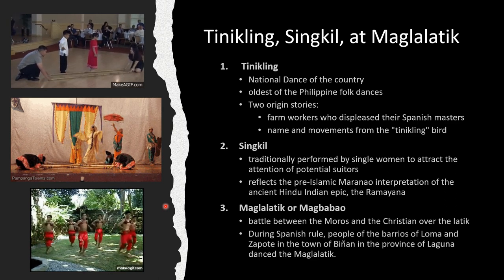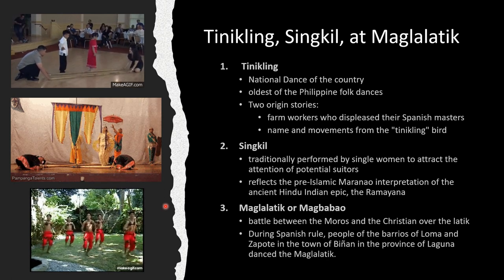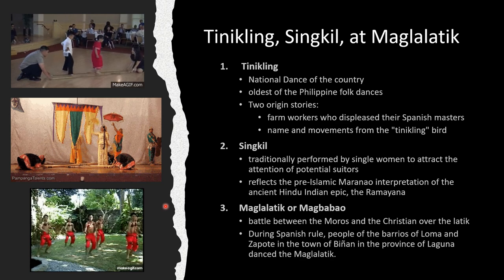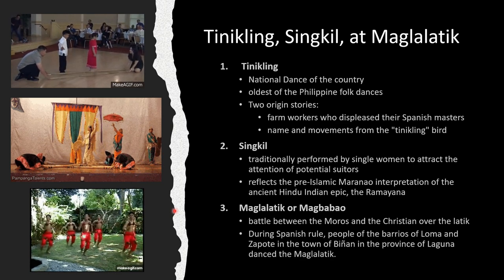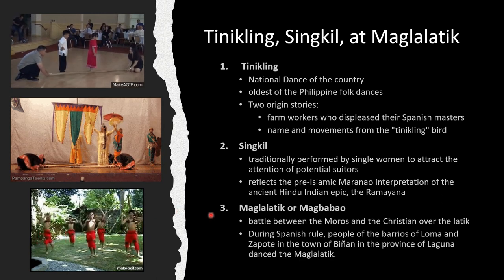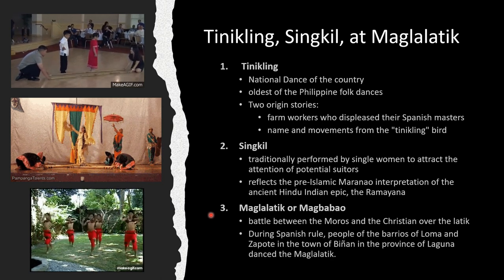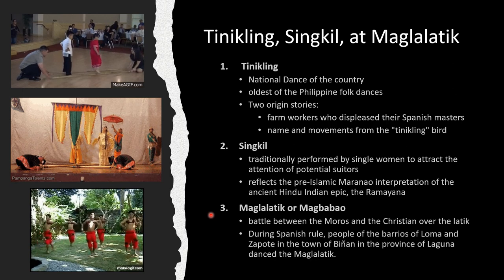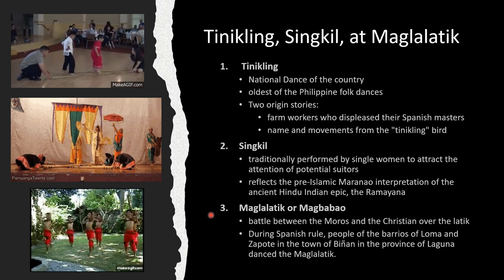This dance reflects the pre-Islamic Maranao interpretation of the ancient Hindu-Indian epic, the Ramayana. The last example is the Maglalatik or Magbabao. It is a war dance representing a picture of the battle between the Moros and the Christians over the latik — the remainder left after the coconut milk has been boiled. At some time in the course of Spanish rule, with coconut shells as tools, the people of the barrios of Loma and Zapote in the town of Biñan in the province of Laguna danced the Maglalatik or Magbabao.